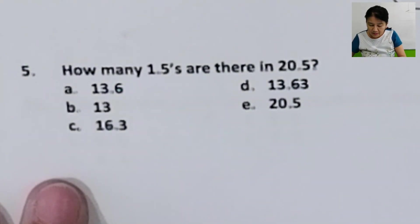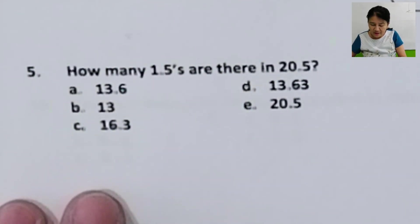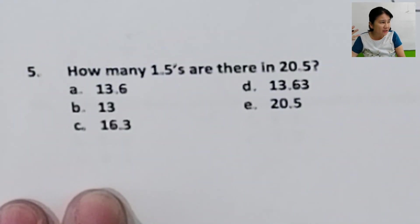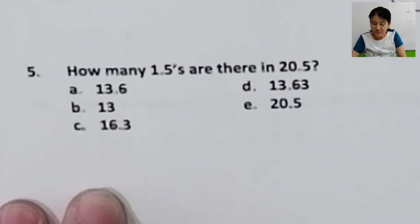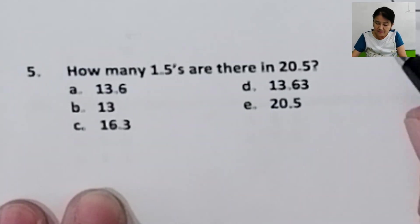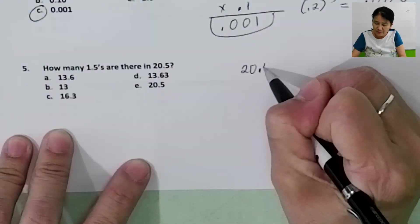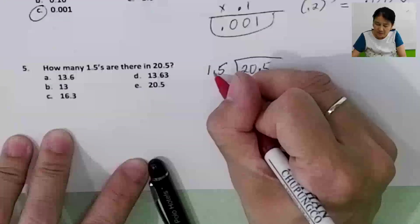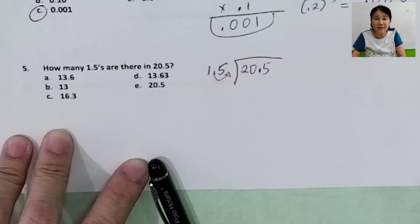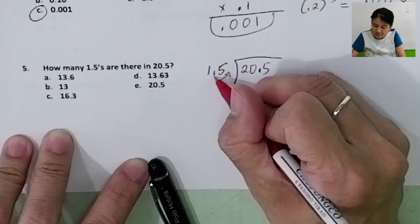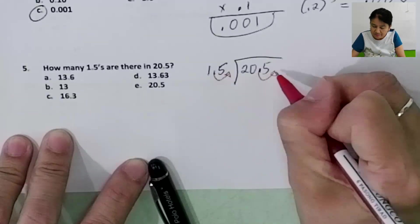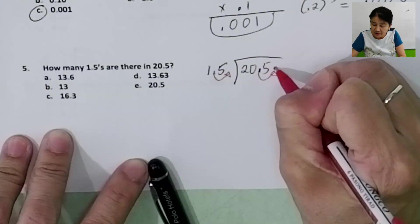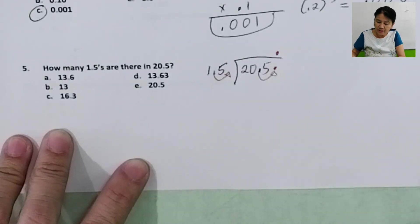Problem number 5. How many 1.5s are there in 20.5? It's as simple as how many 5s are there in 20 — there are four 5s in 20. All you have to do is divide: 20.5 divided by 1.5. Move the decimal point one place to the right to make it a whole number — if you move this one place to the right, you also move the other. Copy the new decimal point immediately so you don't forget.